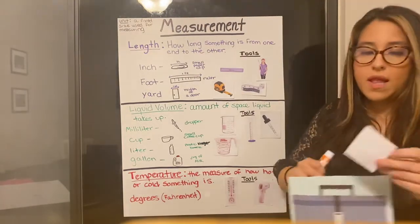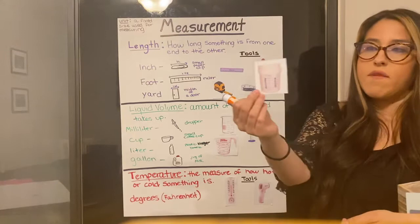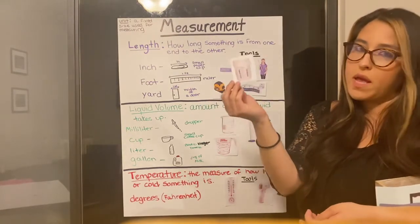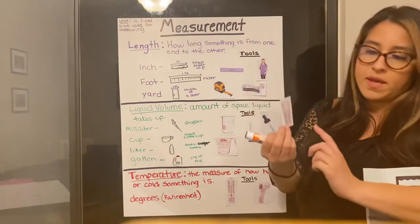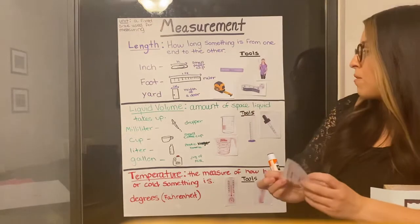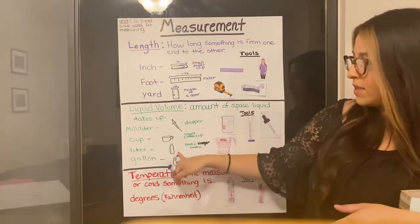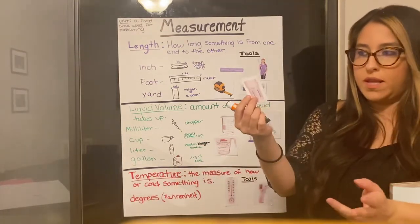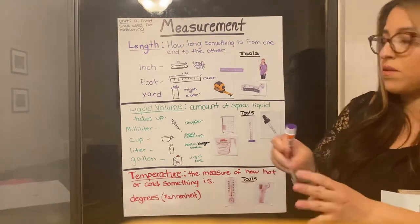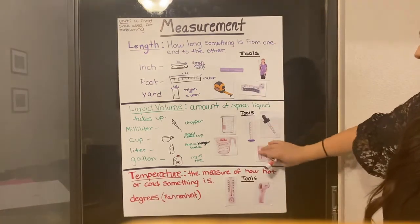And last but not least, I have a big measuring bucket. So this is just like a big bucket, like you would put a mop in, but it has lines for measuring. So if you want to measure something bigger like gallons or liters, you can use a bucket like this.